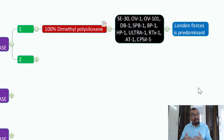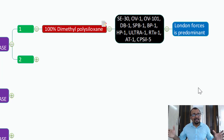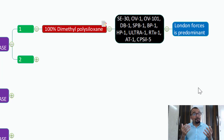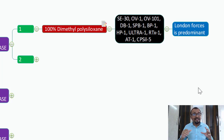The smaller is the molecular size, the smaller will be the retention time. So if you know that your compounds differ heavily in terms of their molecular size and you want to resolve them, then probably the 100% dimethyl polysiloxane can be a better choice, because separation of the compounds is going to happen based on the molecular size of the analytes.